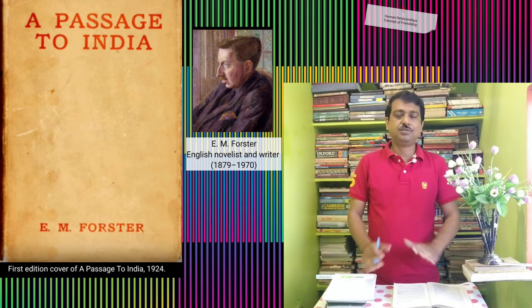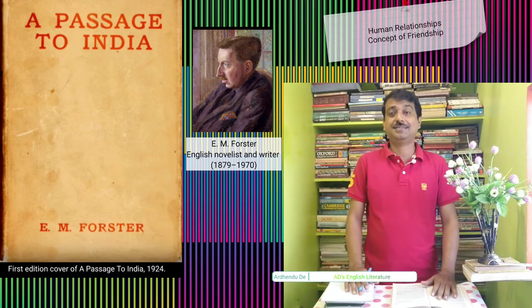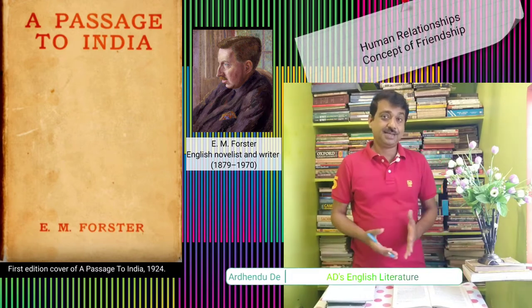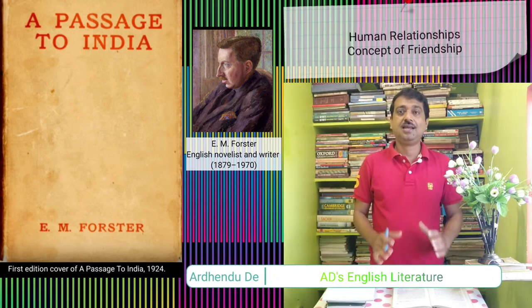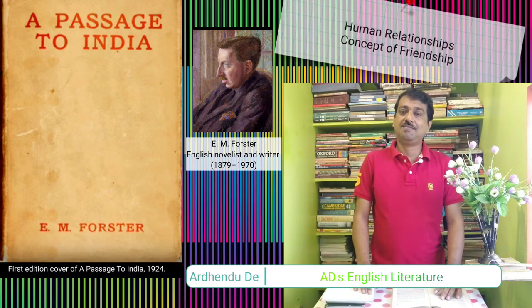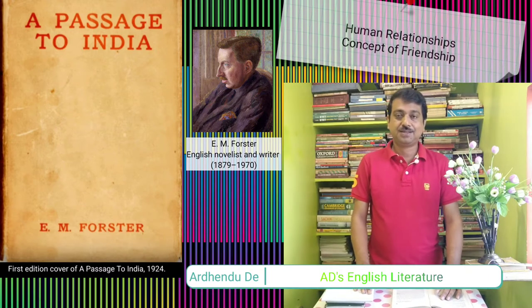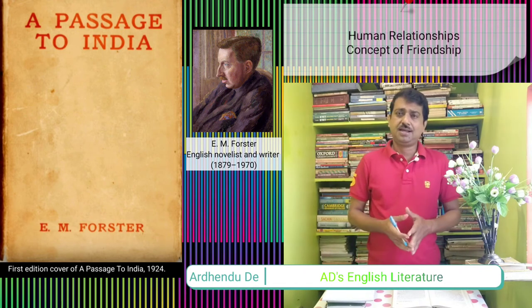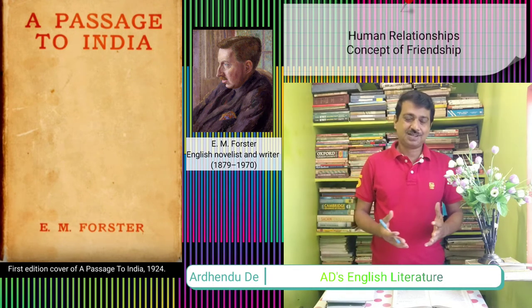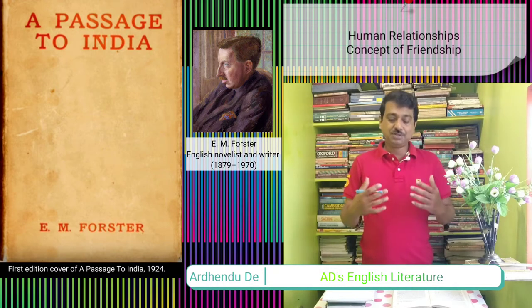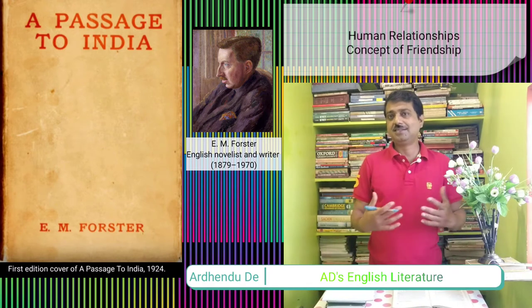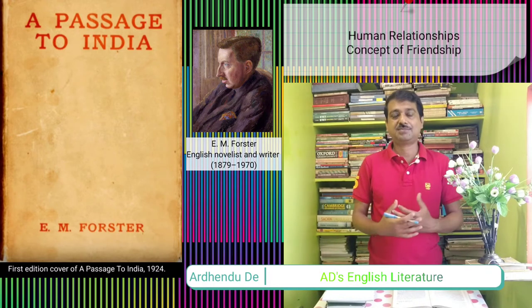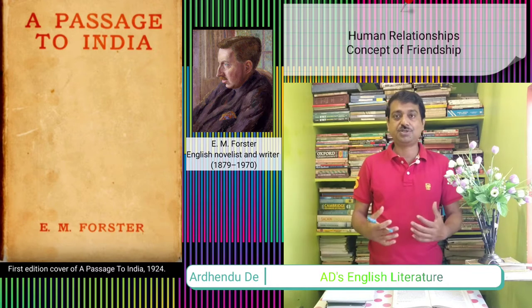Hello friends, I am Ardhen Dode and you are watching Eddie's English Literature. In this video lecture we are going to analyze human relationships in E.M. Forster's A Passage to India, which is a beautiful gateway into the heart of India. The concept of India and how Western people have realized the Indianness is the very subject matter of Forster's beautiful novel.